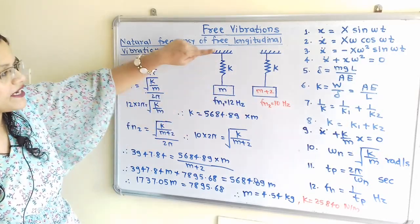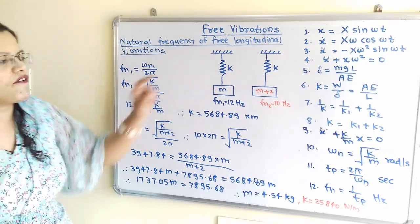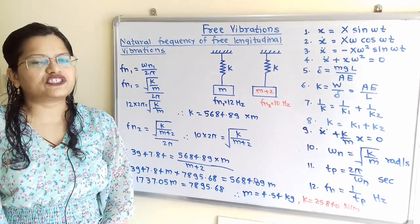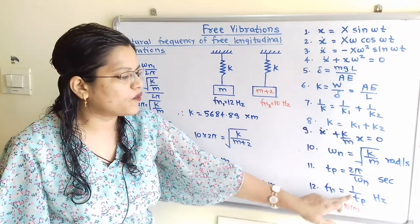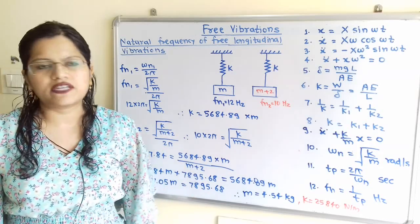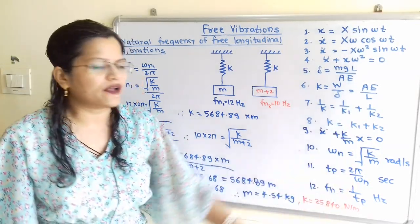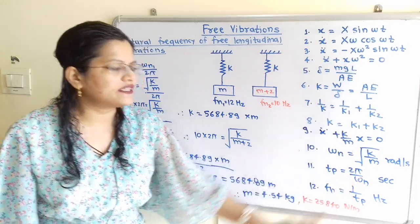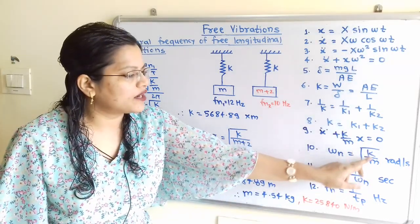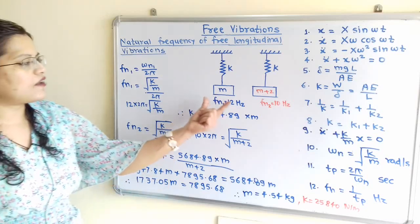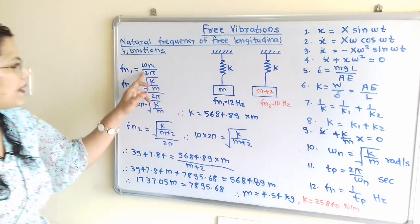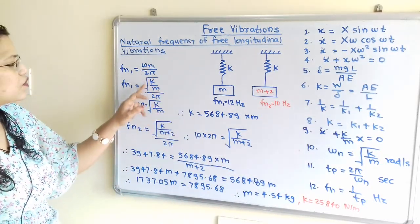For these conditions we find the spring stiffness k and mass m. The formula for natural frequency fn equals 1 divided by time period Tp. Since Tp is not given, Tp equals 2 pi by omega n, and omega n equals under root of k by m. Writing the equation for fn1: fn1 equals omega n1 by 2 pi, where omega n1 equals under root of k by m.